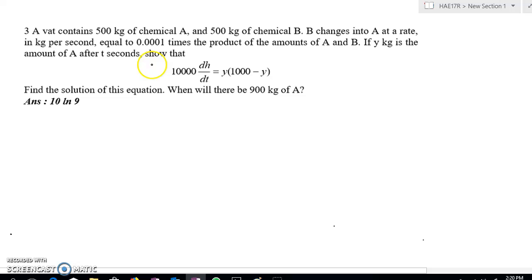You are given that a vat is a place where you mix chemical. It contains 500 kg of chemical A and 500 kg of chemical B. You are told that B changes into A at a rate, so that means it is increasing at this rate.